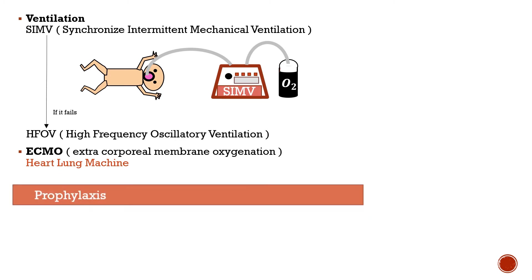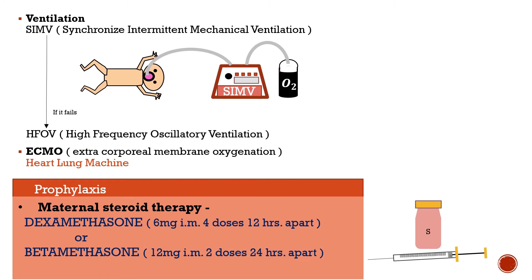Now let us see how to prevent this disease — the prophylaxis. Cortisol and steroids help in generation of surfactant. Hence, for any preterm delivery before 34 weeks, the mother must be given steroid therapy using either dexamethasone or betamethasone. Remembering the dose schedule is easy: dexamethasone has a D, the 4th letter, so 4 doses. The total dose is 24 mg over 2 days, so 6 mg every 12 hours.